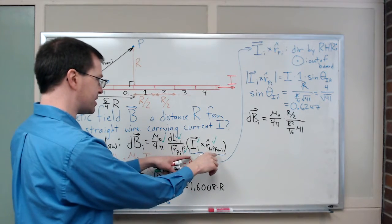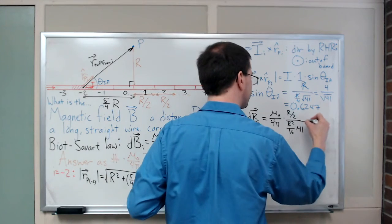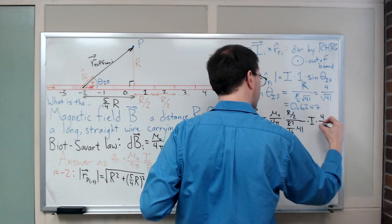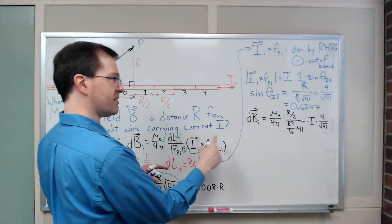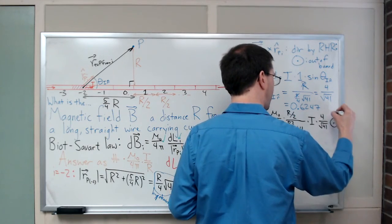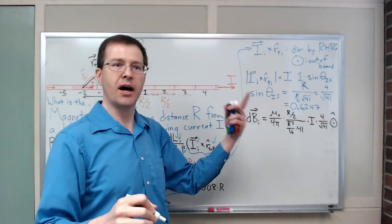This piece is just I times that sine of theta times 4 over the square root of 41. And my direction, this is a vector, so the direction is out of the board. I don't know what to call it exactly, but it's out of the board. That circle dot means out of the board, we're going to stick with that.